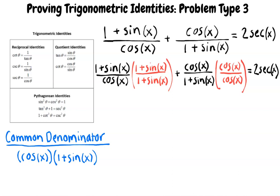We know that this is a valid step since 1 plus sine of x over 1 plus sine of x and cosine of x over cosine of x are both equal to 1, and multiplying any number by 1 maintains the value of that number.